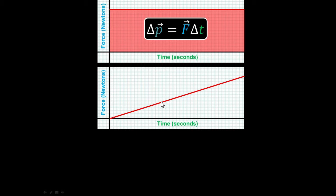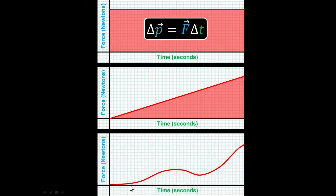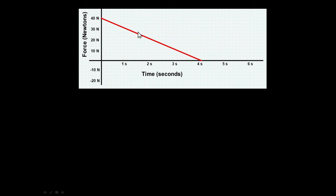If we have a constant force applied for a length of time, that force times that time equals the impulse — which is just the area of that rectangle on a force-time graph. If the force started small and gradually increased, it would be the area under that shape, or the average force times time. For a triangle, that's one-half base times height. If the force varied in a complex curve, you might need calculus to find the area.